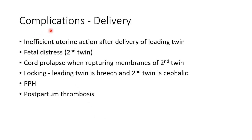Now let us see about the complications during delivery in multiple pregnancy. These include insufficient uterine action especially after delivery of the leading twin, making it difficult to deliver the second twin. Fetal distress is also common in the second twin. Cord prolapse can occur when rupturing the membranes of the second twin. Locking can occur when the leading twin is in breech presentation and the second twin is cephalic. Postpartum hemorrhage and postpartum thrombosis are also more common in multiple pregnancy compared to singleton pregnancy.